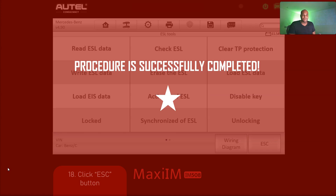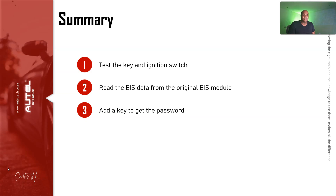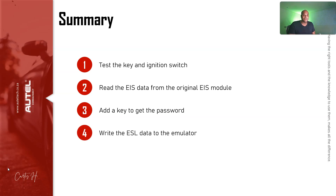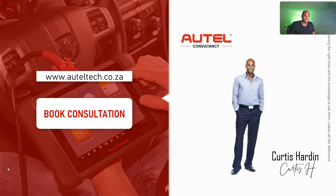This is probably a 20 to 30-minute job if you're new to it, but it's pretty simple. To recap: test the key and ignition switch, read the EIS data from the original module, add a key to generate the password — or skip that if the customer doesn't need one — then write the ESL data to the emulator and verify success. Get out there, let people know you have this capability — it doesn't make sense having the knowledge if no one knows you can do it. Comment, like, subscribe, and I'll see you in the next one.